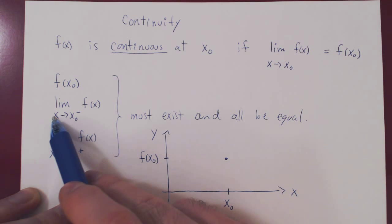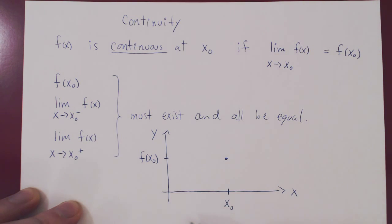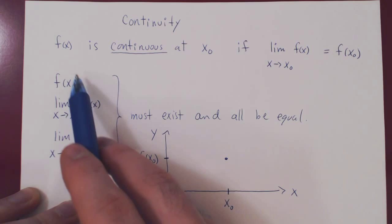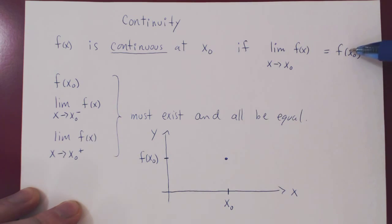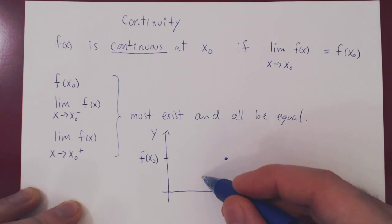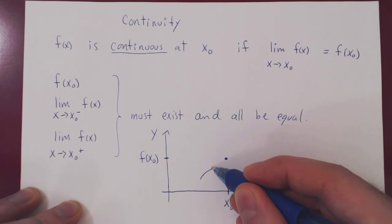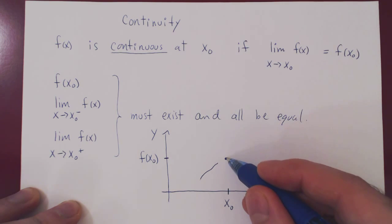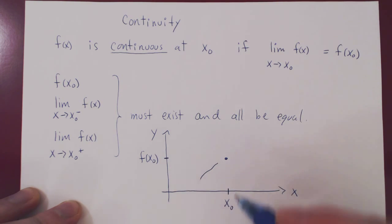And now we're saying as x approaches x0 from the left hand side, so as x is getting closer and closer to x0, the function f of x is approaching the value that is f of x0. So you can imagine the graph may be increasing. And as x is approaching x0 from the left, the graph of the function will have to be approaching the y value f of x0.